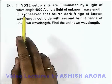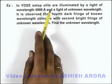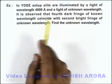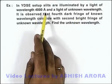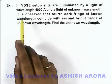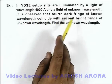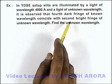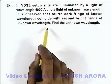In this example we are given that in YDSE setup, slits are illuminated by a light of wavelength 4000 angstrom along with a light of unknown wavelength also. And it is observed that fourth dark fringe of known wavelength coincide with the second bright fringe of unknown wavelength.